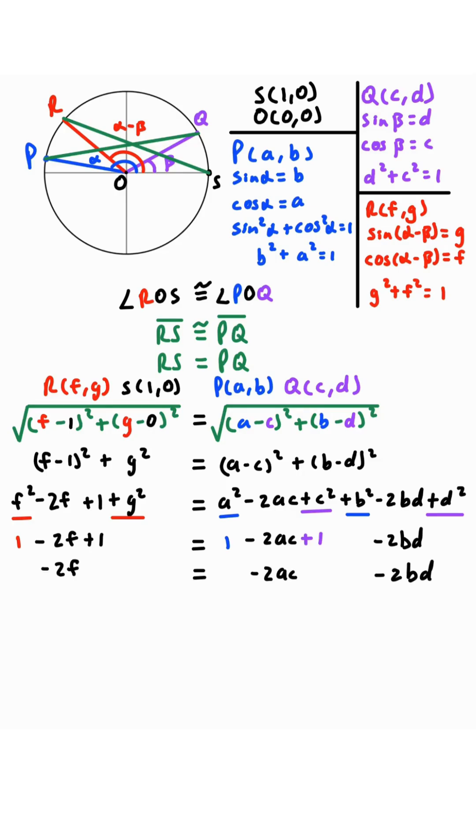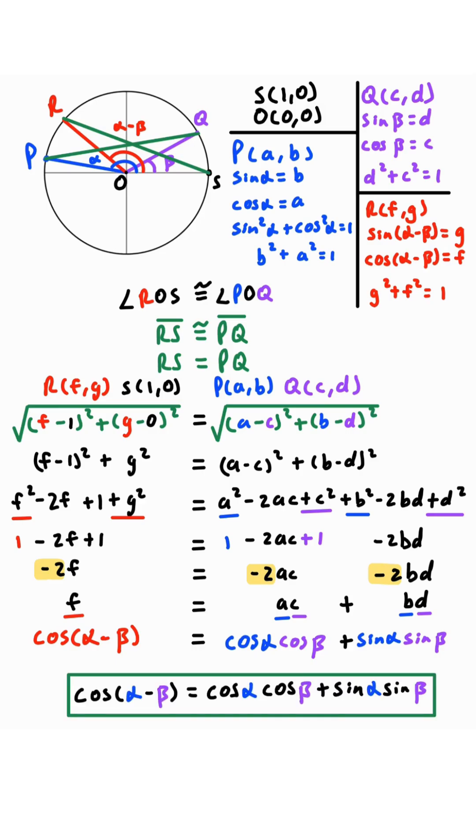We'll subtract 2 from both sides to get negative 2f equals to negative 2ac minus 2bd. We'll divide both sides by negative 2, left with f is equal to ac plus bd. Now, f was originally cosine of alpha minus beta, a was cosine of alpha, c was cosine of beta, b was sine of alpha, and d was sine of beta. And from this, we get that cosine of alpha minus beta is equal to cosine of alpha cosine of beta plus sine of alpha sine of beta, which is the cosine difference formula.